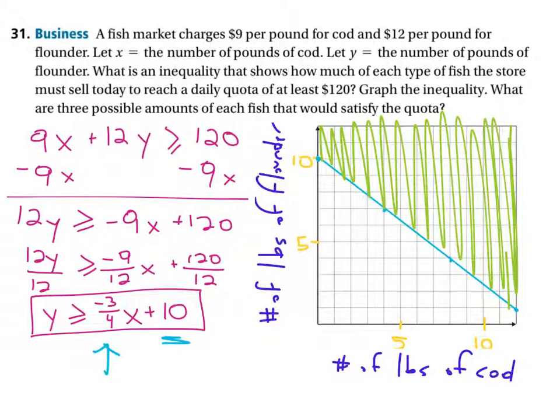Now remember, this is telling us the number of fish that we can sell of each type in order to reach or exceed the quota. So now I'm going to put some points in here that are in the shaded region. All we have to do is pick something that's either on the line or above it. And I'm going to pick some points that are on the line, like this point right here. And what is that point? That point is four comma seven.